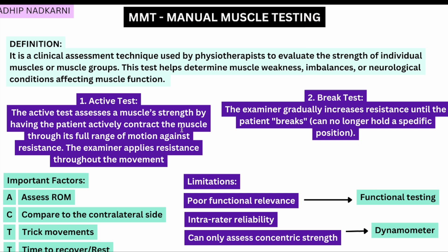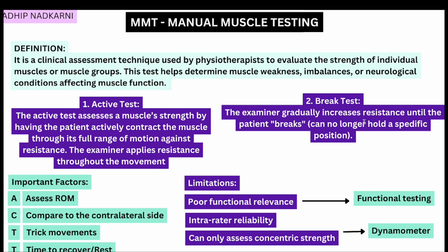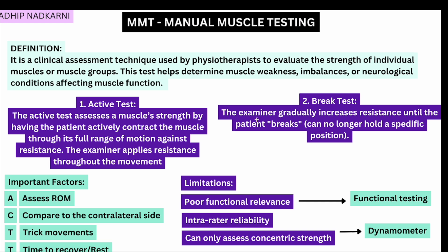The active test assesses the muscle's strength by having the patient actively contract the muscle throughout its full range of motion against resistance — the examiner applies resistance throughout the movement. In the break test, the examiner gradually increases the resistance until the patient breaks, that is, can no longer hold the specific position.